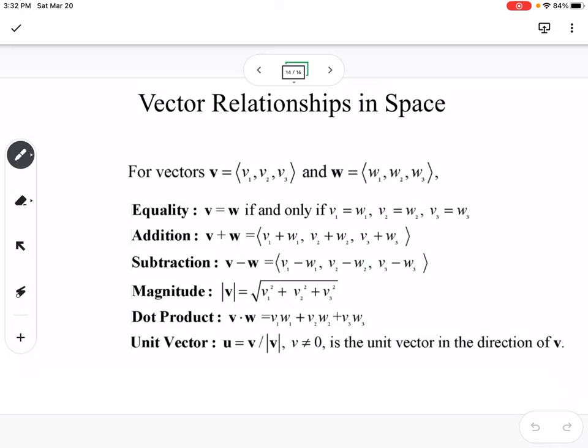All the same rules. Addition, we're just going to add the components. Subtraction, we're going to subtract the components. Magnitude of vector V in three dimensions would be √(v₁² + v₂² + v₃²), so you're squaring all the components and adding them together. Dot product is v₁w₁ + v₂w₂ + v₃w₃. And then same unit vector, you take the vector divided by the magnitude of the vector.